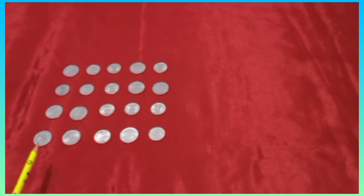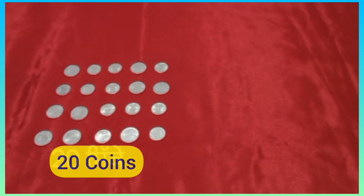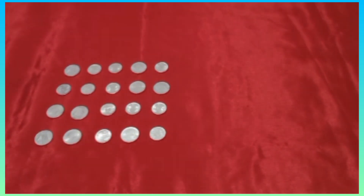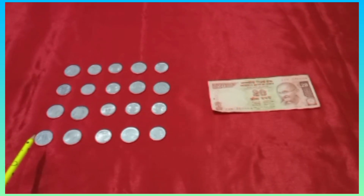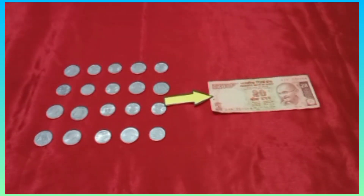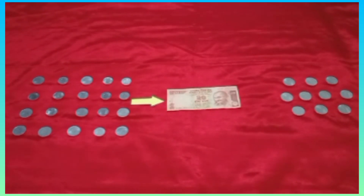So dear students, how many coins of 1 rupee do we have? Yes, we have 20 coins of 1 rupee, and the value of 20 one-rupee coins is equal to 1 twenty-rupee note. We can take a greater value note or coin instead of small value coins.